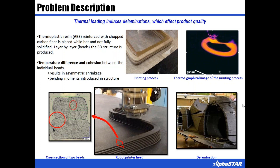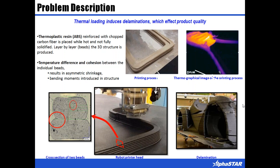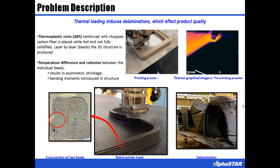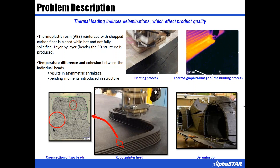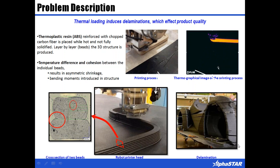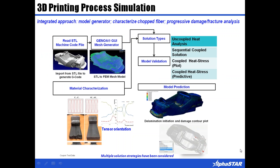Now let's show how we simulate this problem and ultimately solve processes related to additive manufacturing. The solution approach starts here: the Genoa GUI reads the STL or the machine g-code. Once the g-code is read or imported, the Genoa GUI will generate the mesh that includes the material orientation according to the machine head.